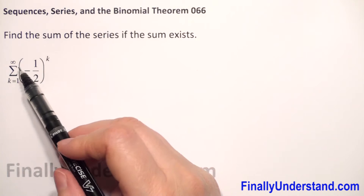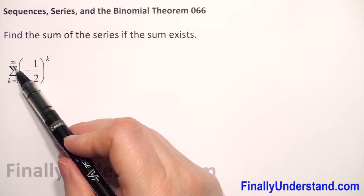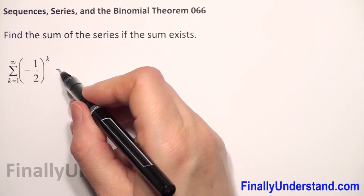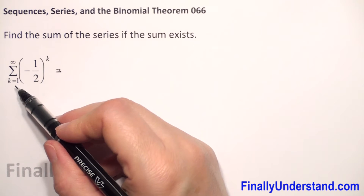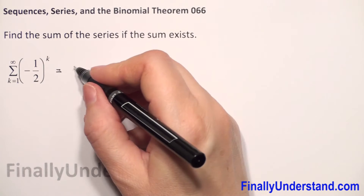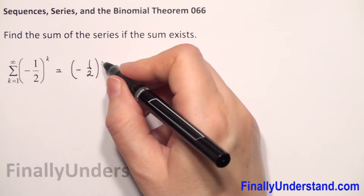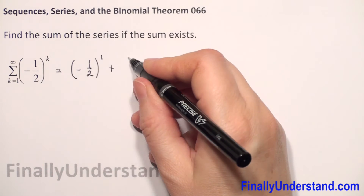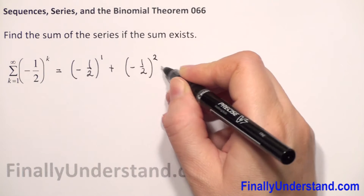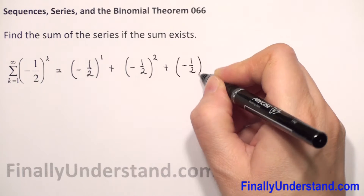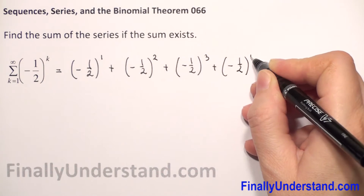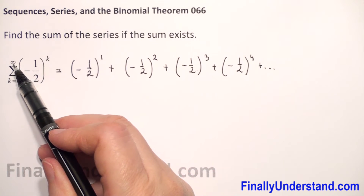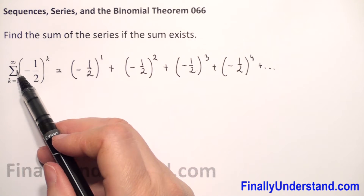Our sum goes to infinity because we have from k equals 1 to infinity. We can rewrite the sum by substituting k starting from 1: negative 1 half to the first power, plus negative 1 half squared, plus negative 1 half cubed, plus negative 1 half to the fourth power, and so on, since the sum goes to infinity.